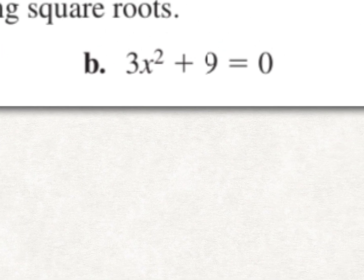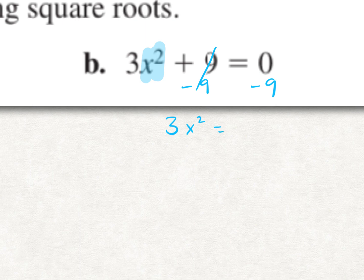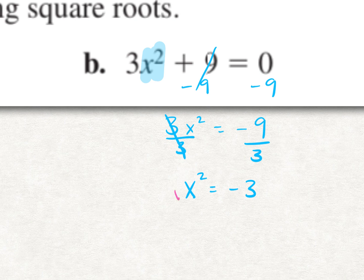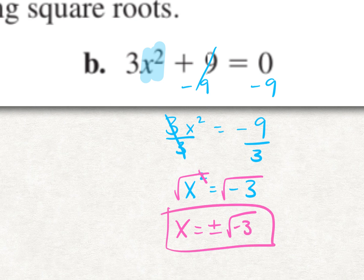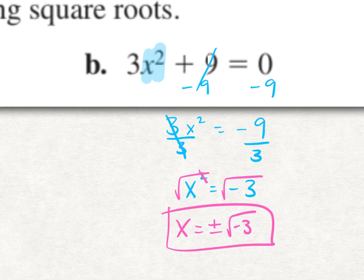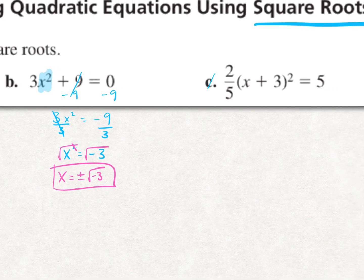For part b, we just have an x squared, so we isolate it by moving everything else to the other side. First, subtract 9: 3x squared equals negative 9. Then divide both sides by 3: x squared equals negative 3. Now that x squared is by itself, take the square root of both sides. Any time we take the square root of both sides, we need plus or minus. So x equals plus or minus square root of negative 3. We can't simplify square root of negative 3, so that's our answer. We'll skip part c for now.